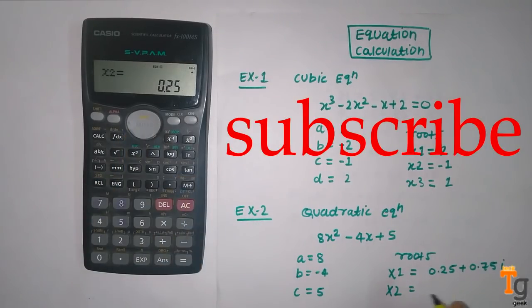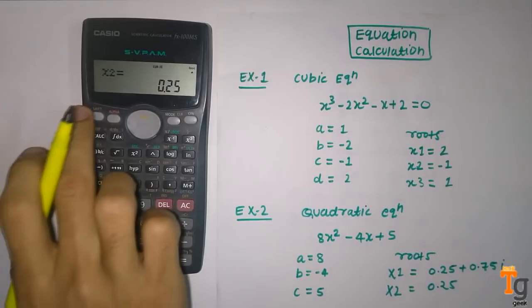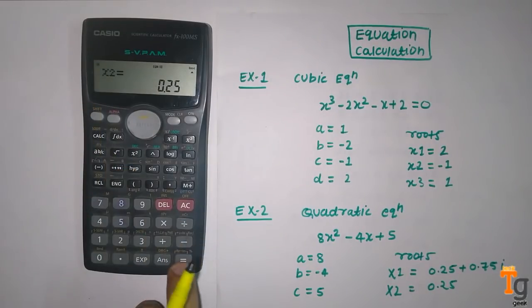For root 2, this is a real value. And for calculating imaginary part, we will again press shift and then this equal button. The value of imaginary part is in the form of minus.